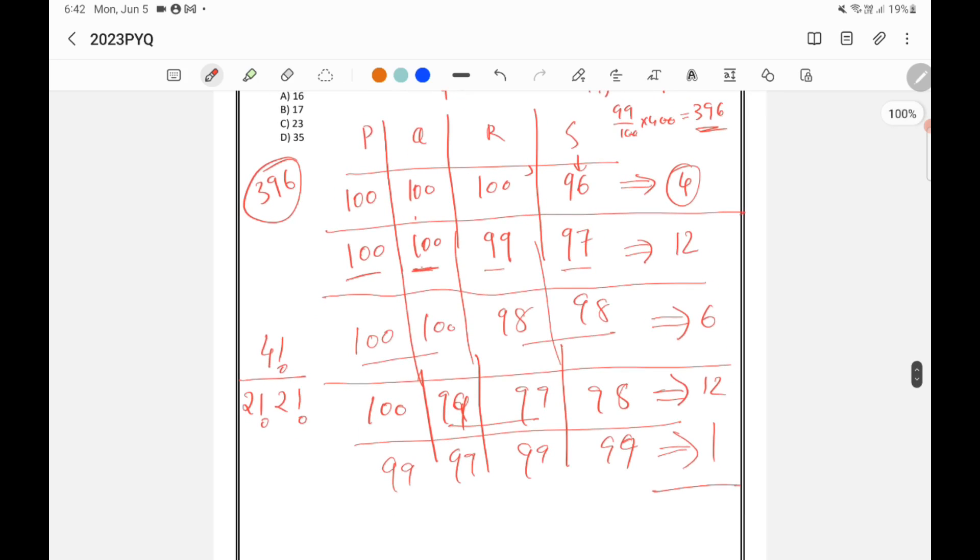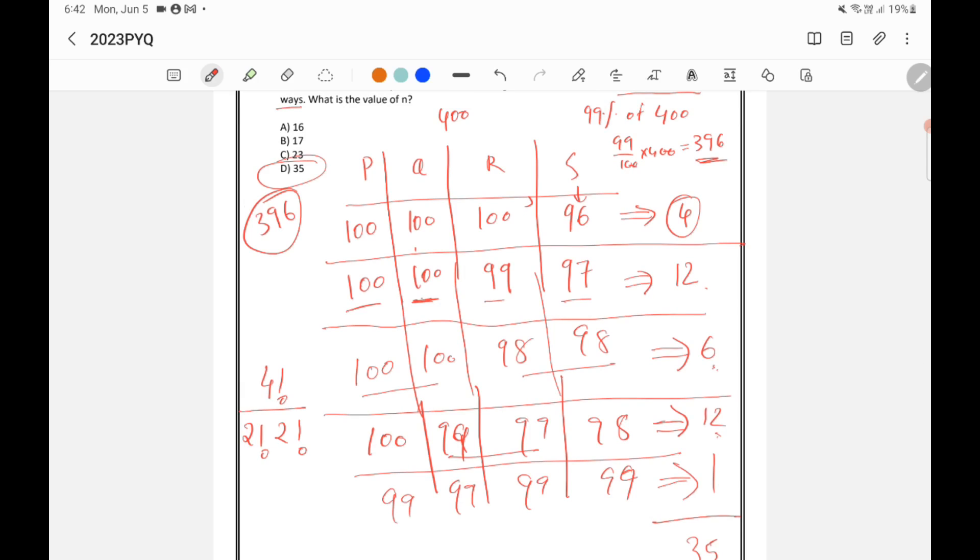So if you add all these things, 4 plus 12 is 16, 16 plus 6 is 22, 22 plus 12 is 34, 34 plus 1 is 35. So total 35 possibilities are there. So option D is the right answer.